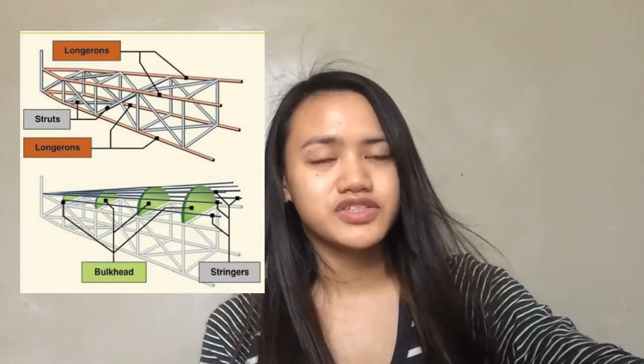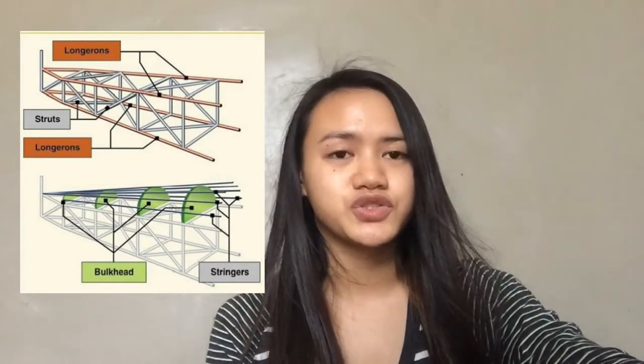Let's go to the major components of an aircraft. There are five major components. The first component is the fuselage. It is the central body of an airplane and is designed to accommodate the crew, passengers, and cargo. It also provides the structural connection for the wings and tail assembly.